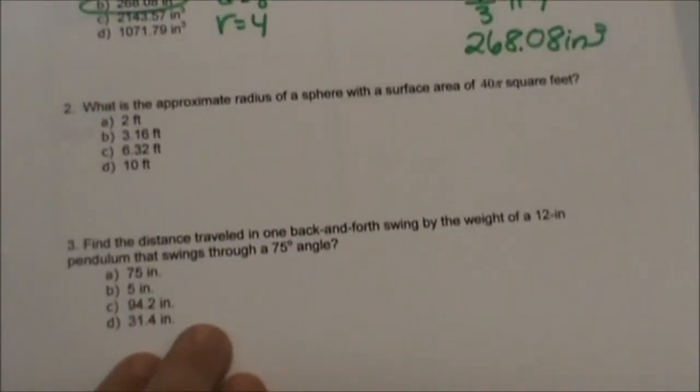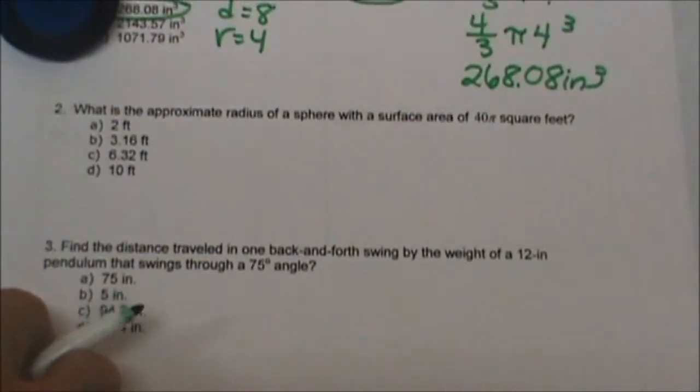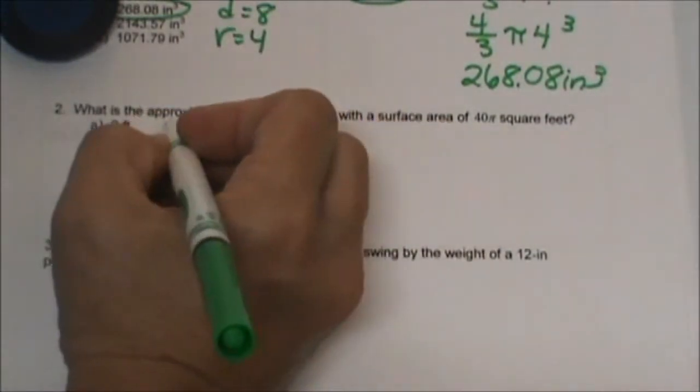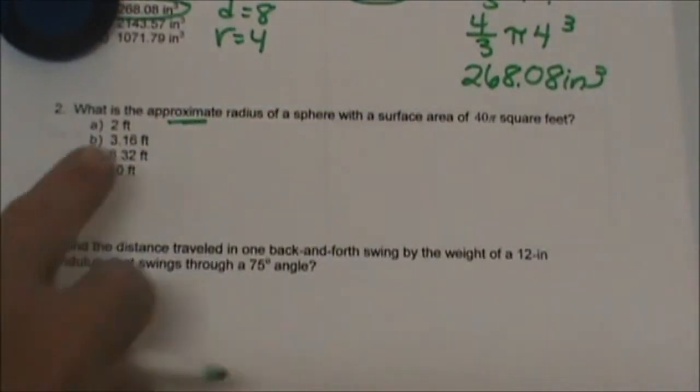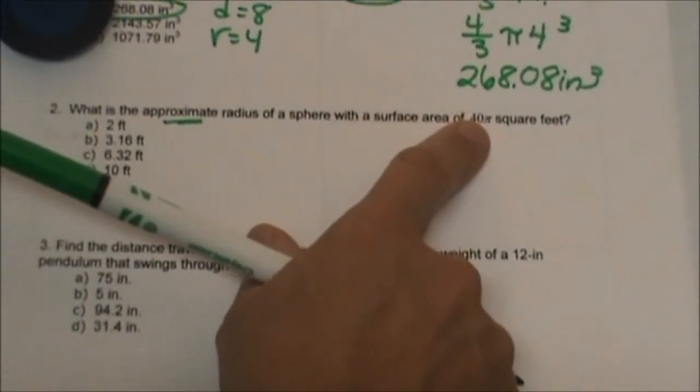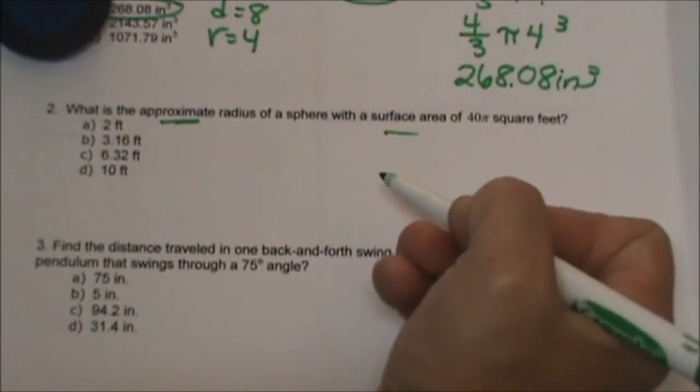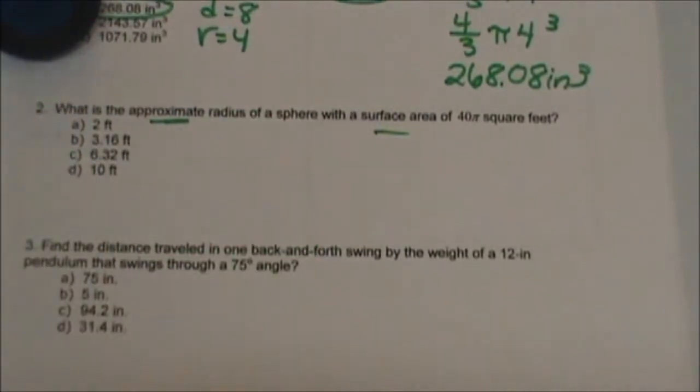Let's look at number 2. What is the approximate radius, so we're going to have to do some dividing probably with π. Approximate radius of a sphere with a surface area of 40π. They're giving us the surface area and they want us to find the radius, so we're going from area backwards to just the linear measurement.